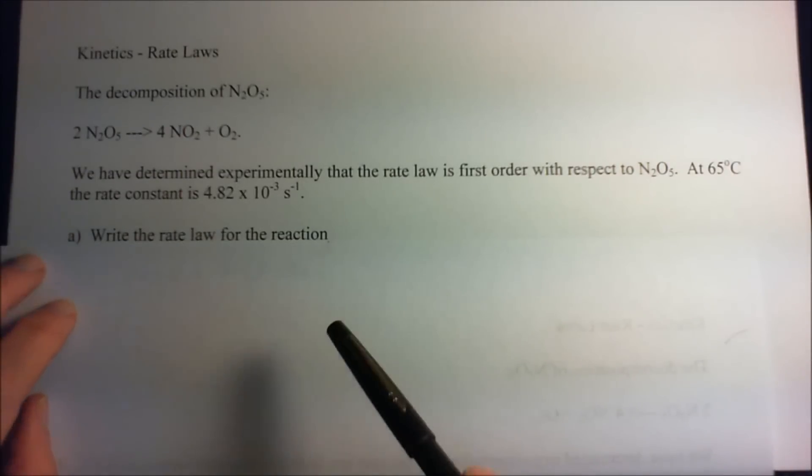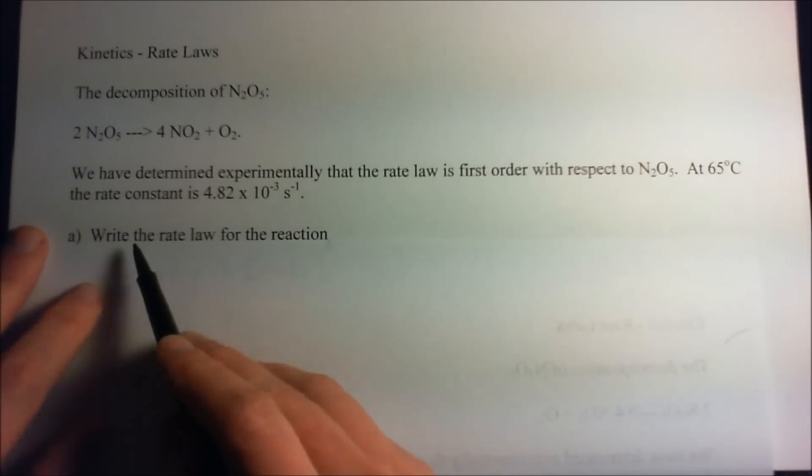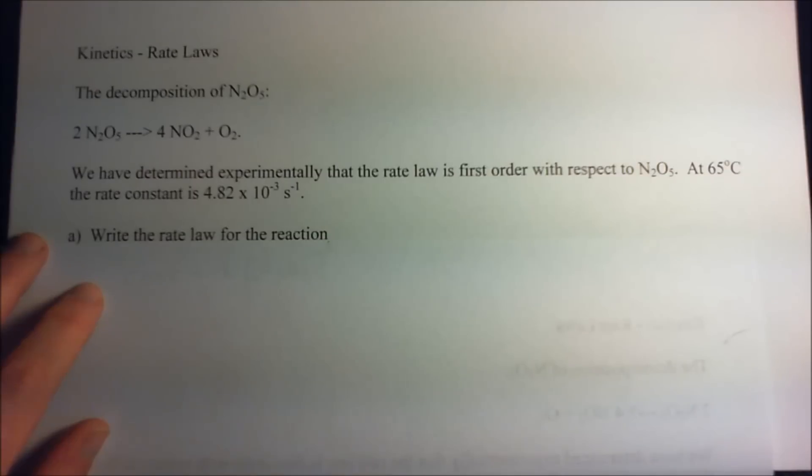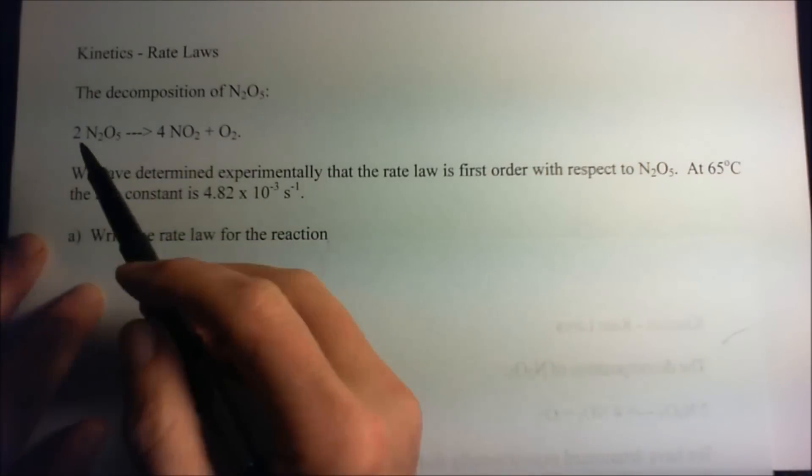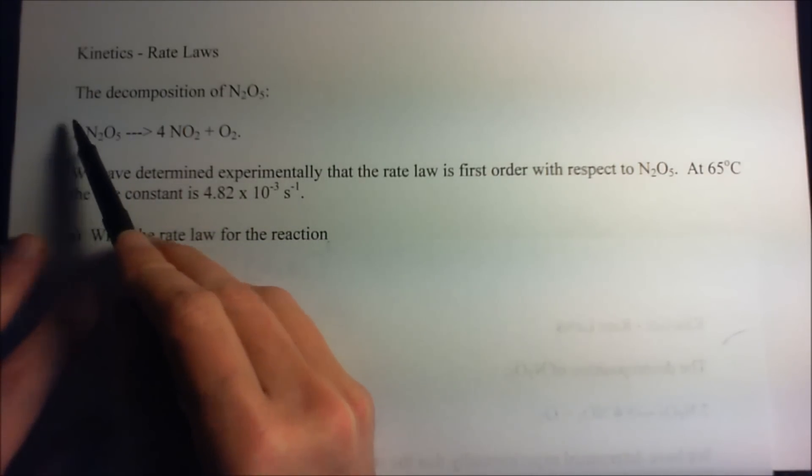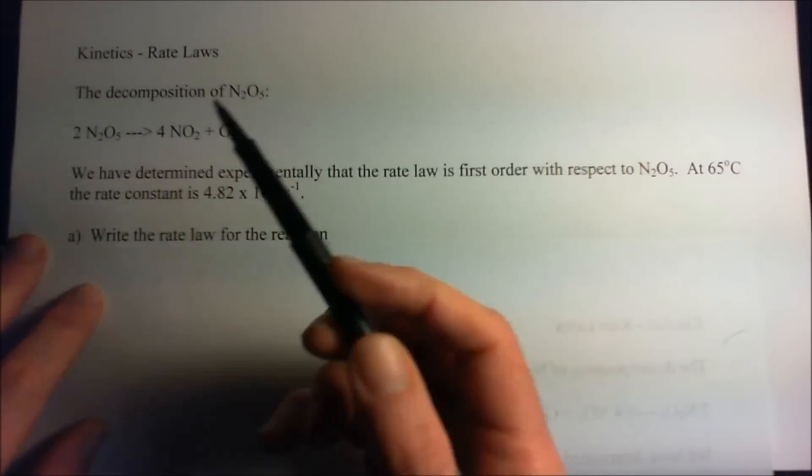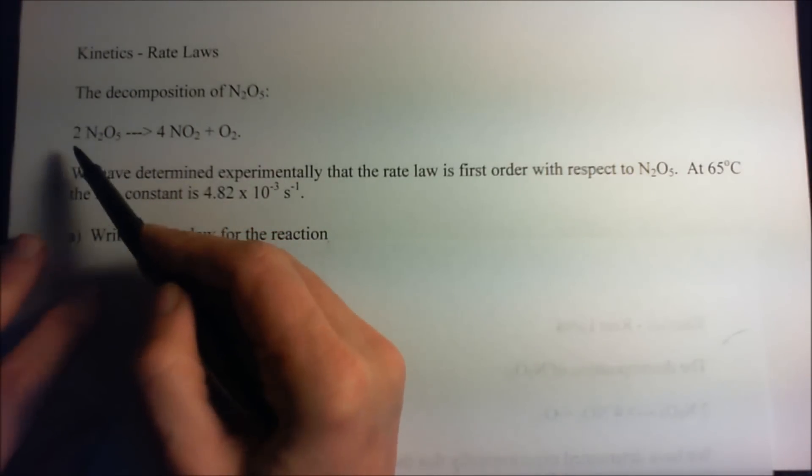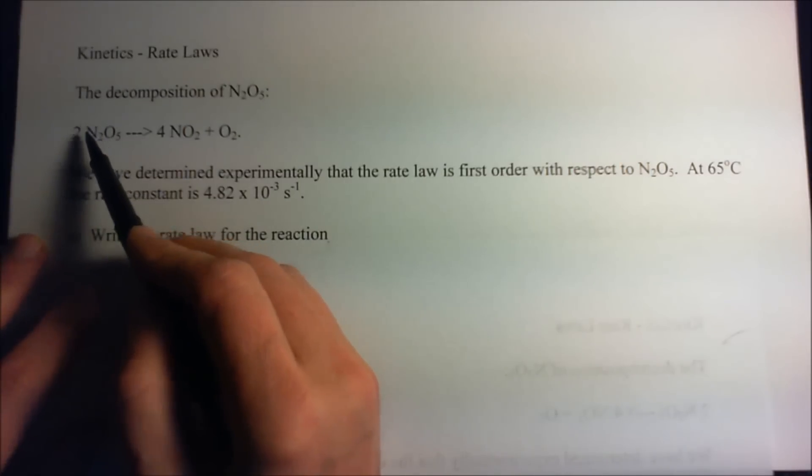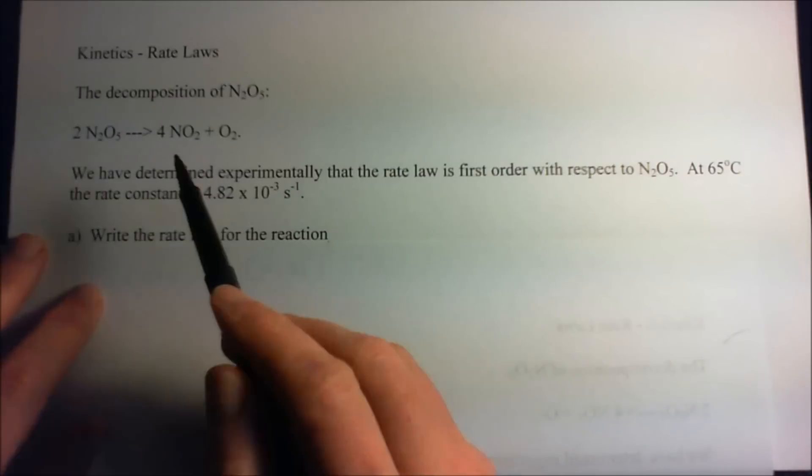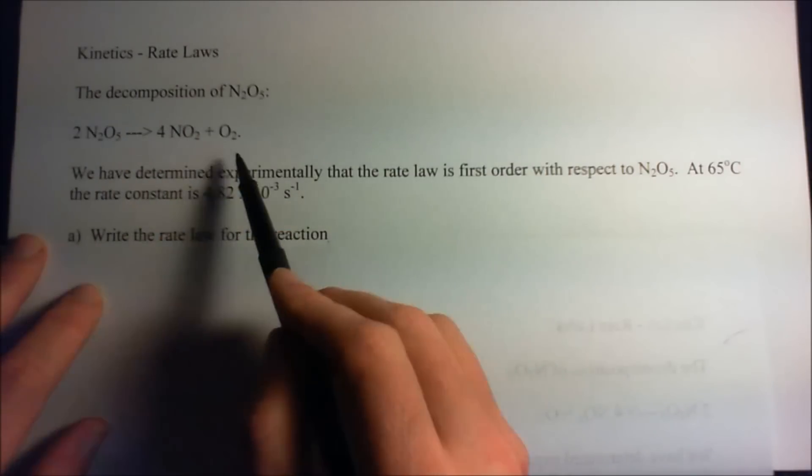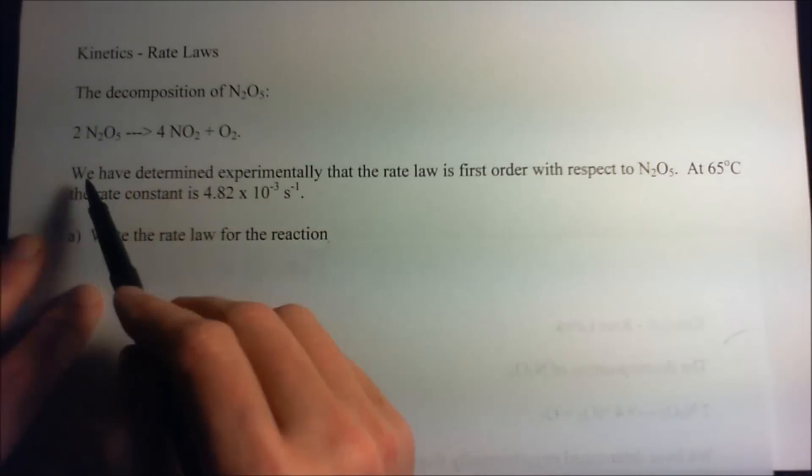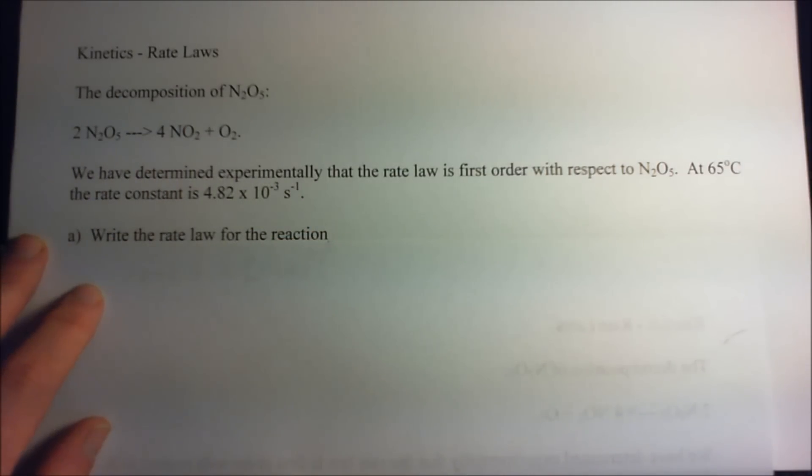Now this is problem number A, letter A for the problem. And we want to write the rate law for the reaction. Now one thing I have to caution you is that we don't just take the coefficient and the concentration and write down, for instance, the rate equals K times N2O5 to the second power. We don't know that. This could be a multiple step reaction but this is the overall stoichiometry reaction.